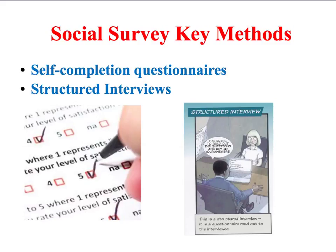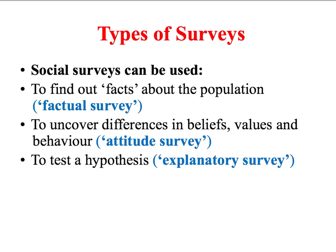Remember, structured interviews is where you simply read out your questionnaire to your respondents. There are three main types of social survey designs. Firstly, there's what we call a factual survey — this is about trying to find out facts about the population. The researcher aims to discover and describe the extent of a particular social phenomenon. For example, the Joseph Rowntree Foundation regularly conducts large-scale surveys to highlight the scale of poverty within the UK.